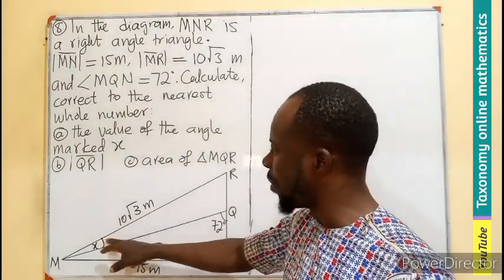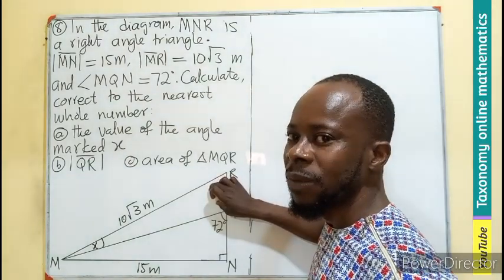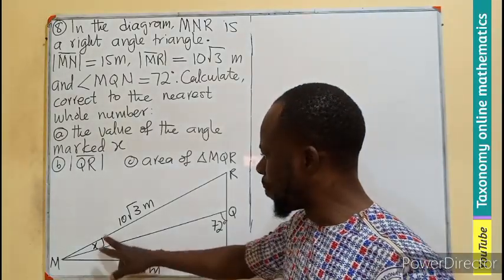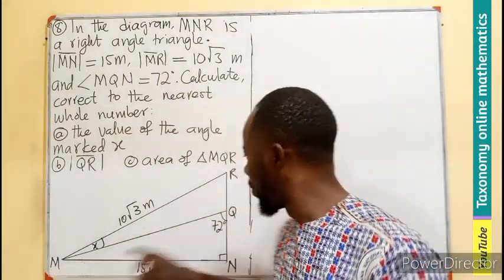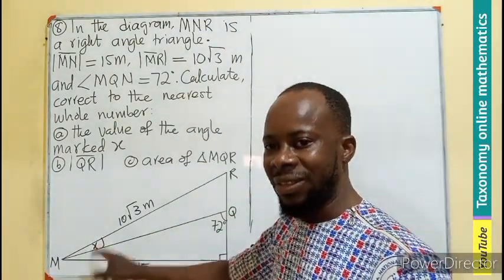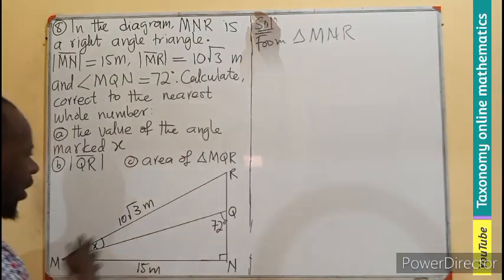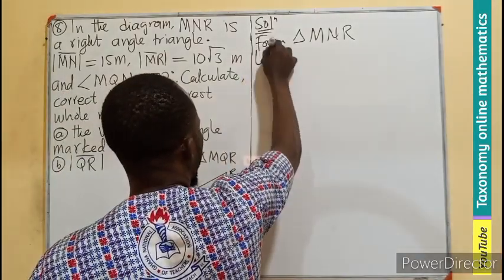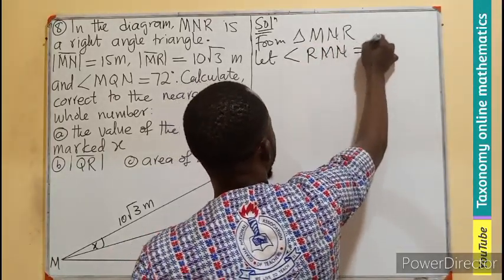First thing first, let's see how we can find the angle marked X. In this triangle, this is not a right angle triangle, so Pythagoras theorem or trigonometric functions cannot be used directly. But if we combine this angle together — taking the whole triangle and ignoring the line MQ — we can treat this as a right angle triangle. We let the angle RMN be equal to theta.